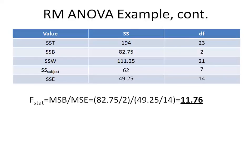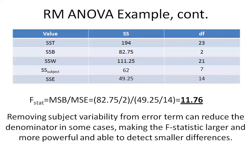Now we can calculate our F statistic, which is MSB divided by MSE. The numerator is 82.75 divided by 2. The denominator is not 111.25 divided by 21 as it would be in a regular one-way ANOVA, but instead the error subset: 49.25 divided by 14. This gives an F statistic of 11.76. It's important to note that removing subject variability from the error term can reduce the denominator, making the F statistic larger and more powerful — able to detect even smaller differences than a regular one-way ANOVA.